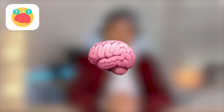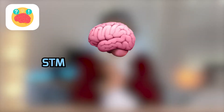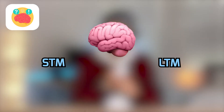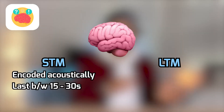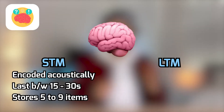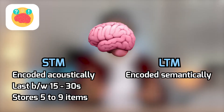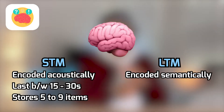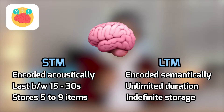Once our brains encode information it needs to be stored, and there are two places where this can happen. We have our STM, which is short-term memory, and our LTM, which is long-term memory. The STM is mainly encoded acoustically, can last anywhere from 15 to 30 seconds, and can only store a limited amount of five to nine things. On the other hand, the LTM is mainly encoded semantically, but can also store information encoded visually or acoustically, with indefinite capacity and unlimited storage duration.